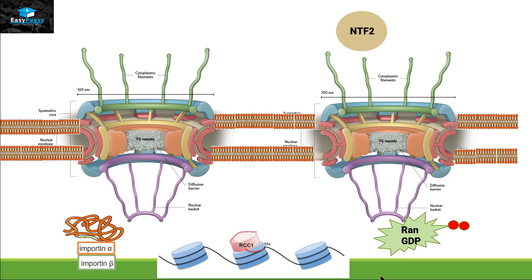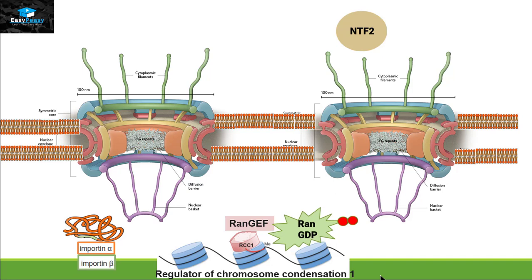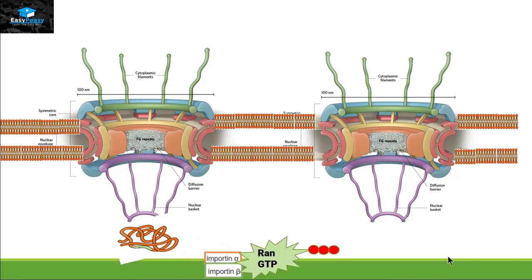The full form of RCC1 is Regulator of Chromosome Condensation 1. This protein can also be called RAN-GEF. RAN-GEF attaches itself to RAN-GDP and adds one phosphate group, converting it back into RAN-GTP. RAN-GTP can then perform its function again — it attaches itself to importin and causes it to release the cargo protein.